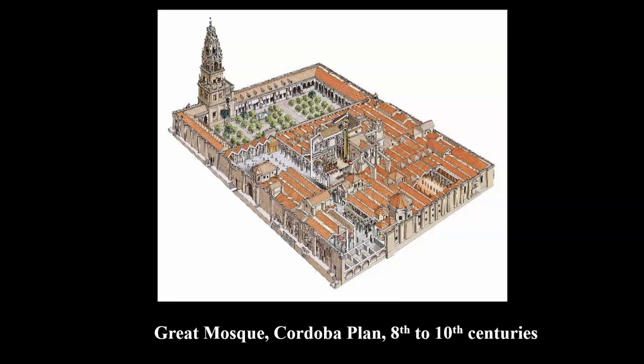The Great Mosque of Córdoba was built in the 8th century by the Umayyad caliphate. One of the Umayyad princes was able to escape the Abbasid overthrow of the Islamic leadership.